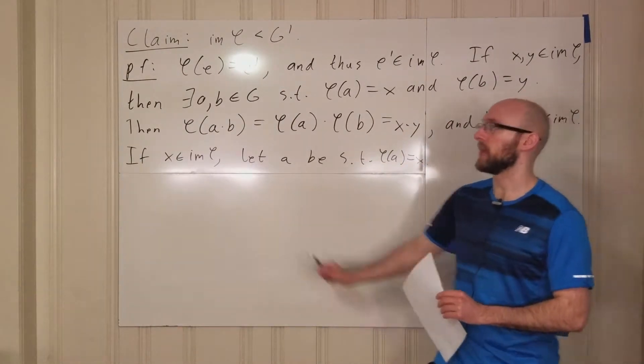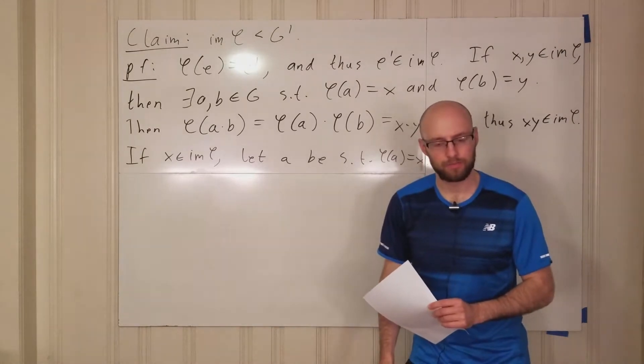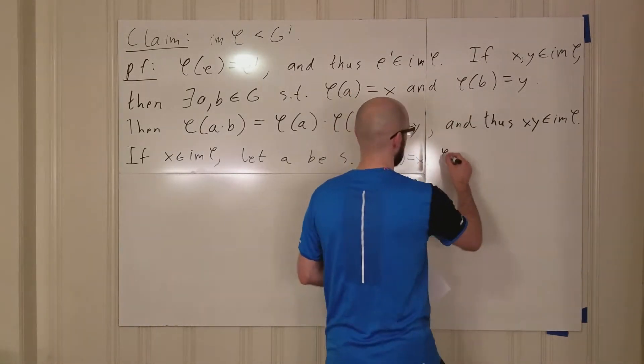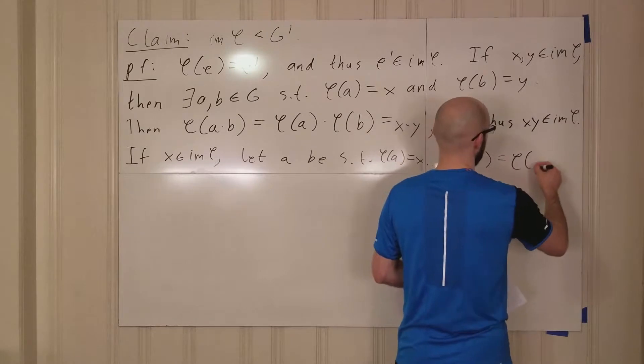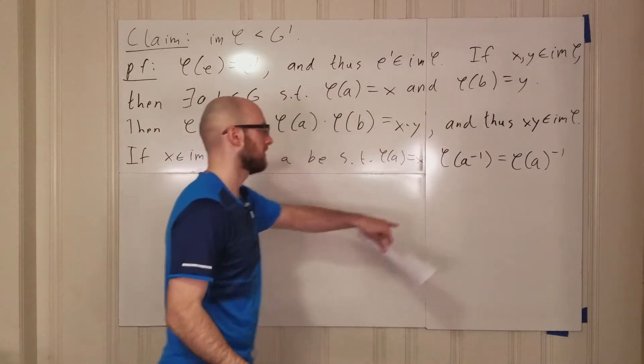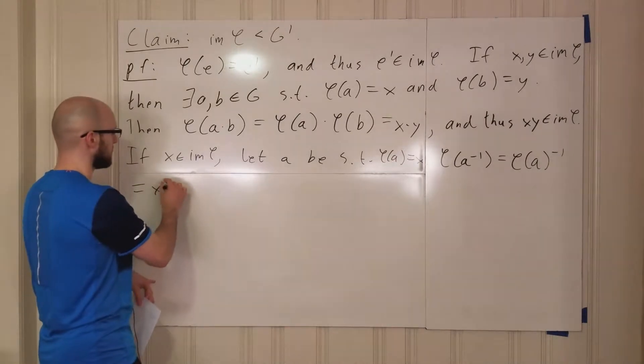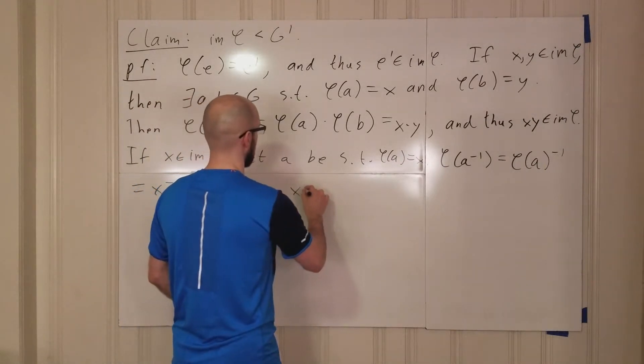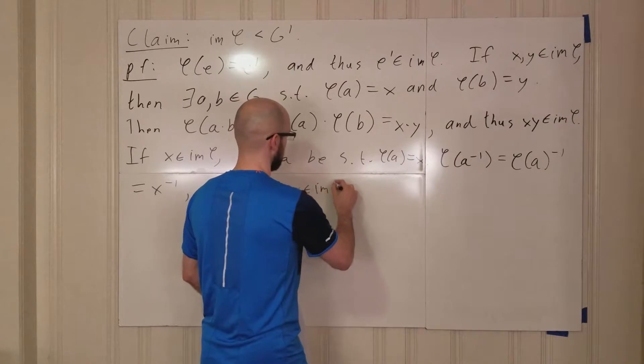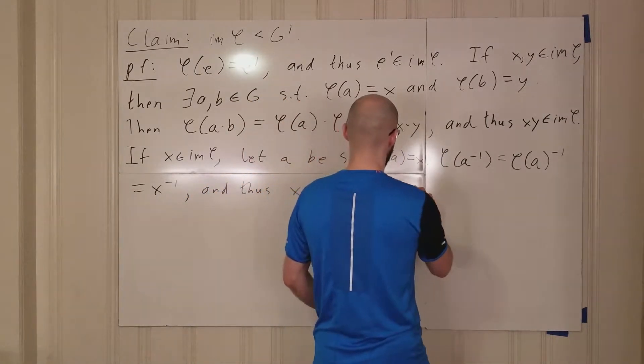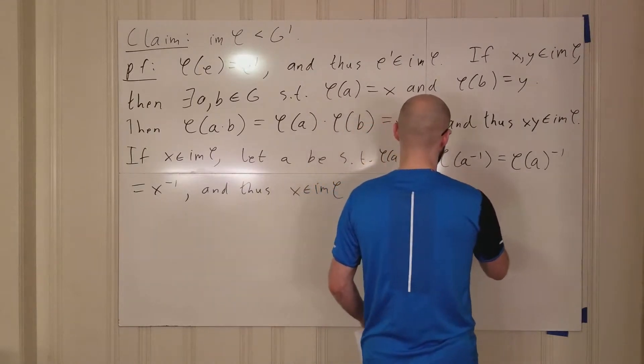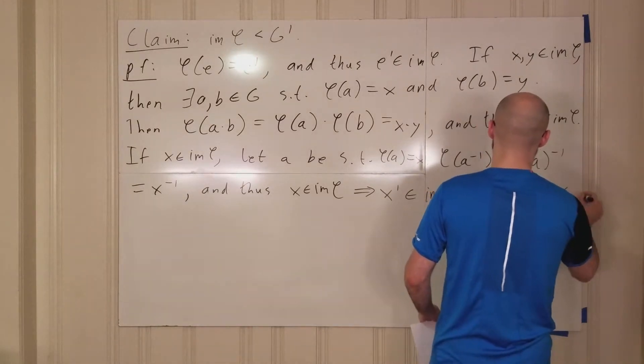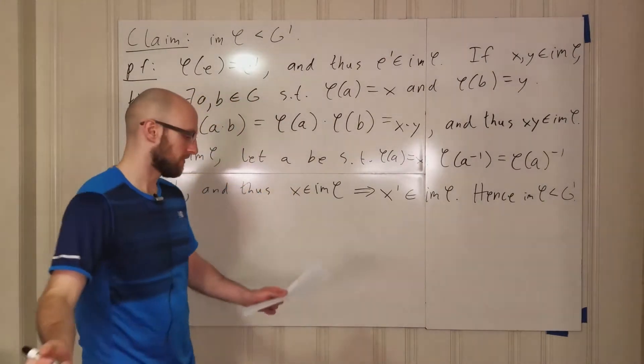So now what we want to do is we want to prove that X inverse is in the image. So again, we have this A. What should we look at? Well, let's see where phi maps A inverse. Phi of A inverse equals, okay well, we know that we can bring inverses outside. So that's just phi of A inverse. But phi of A is X. So this is just X inverse. And thus, if X is in image of phi, then X prime is in the image of phi. And hence, the image of phi is a subgroup of G prime. And that finishes the proof.